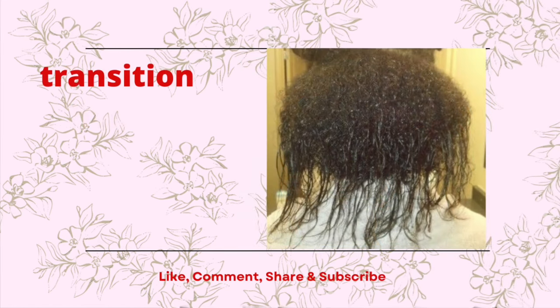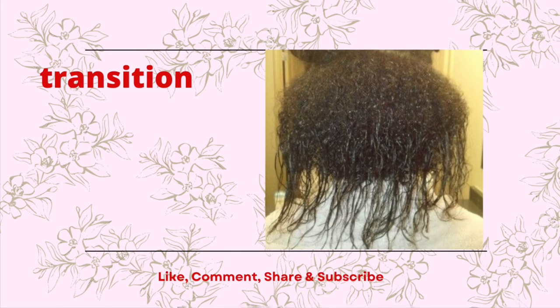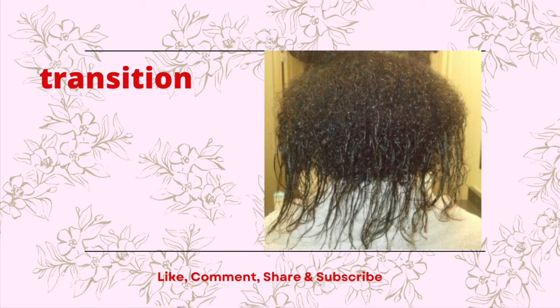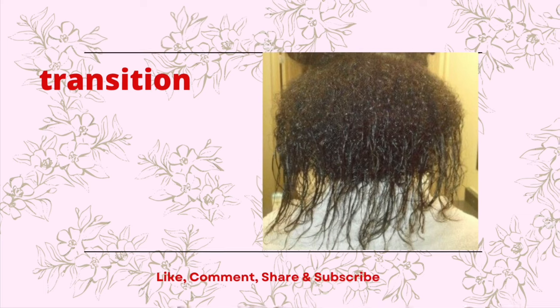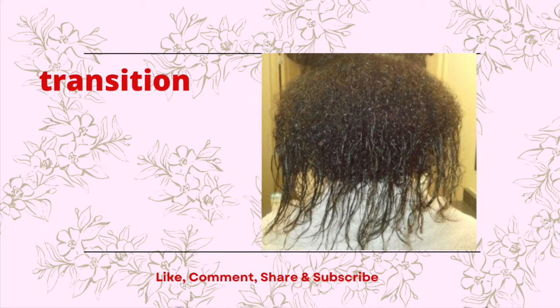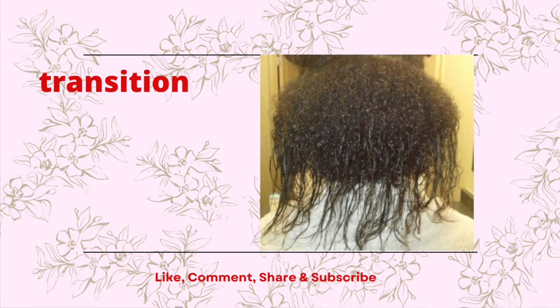However, if you're not comfortable with that, you can transition from relaxed to natural in a slow fashion. You have to allow your natural hair to grow — first stop relaxing, then allow your hair to grow underneath the relaxed hair. When you're satisfied with the length, you can cut off the relaxed ends, or do it more gradually by cutting little by little as you achieve the length you want.